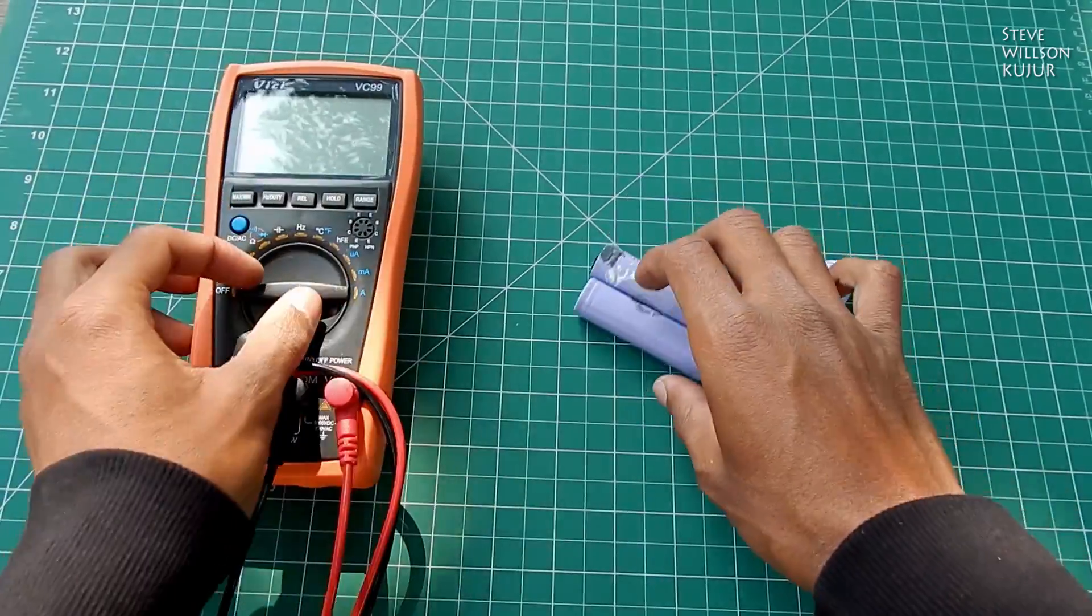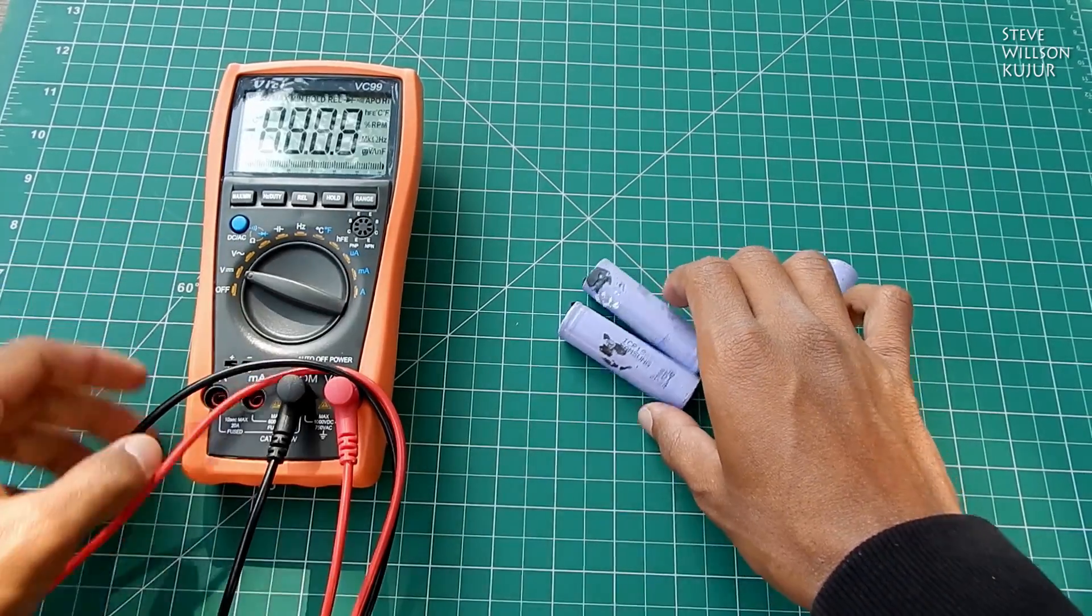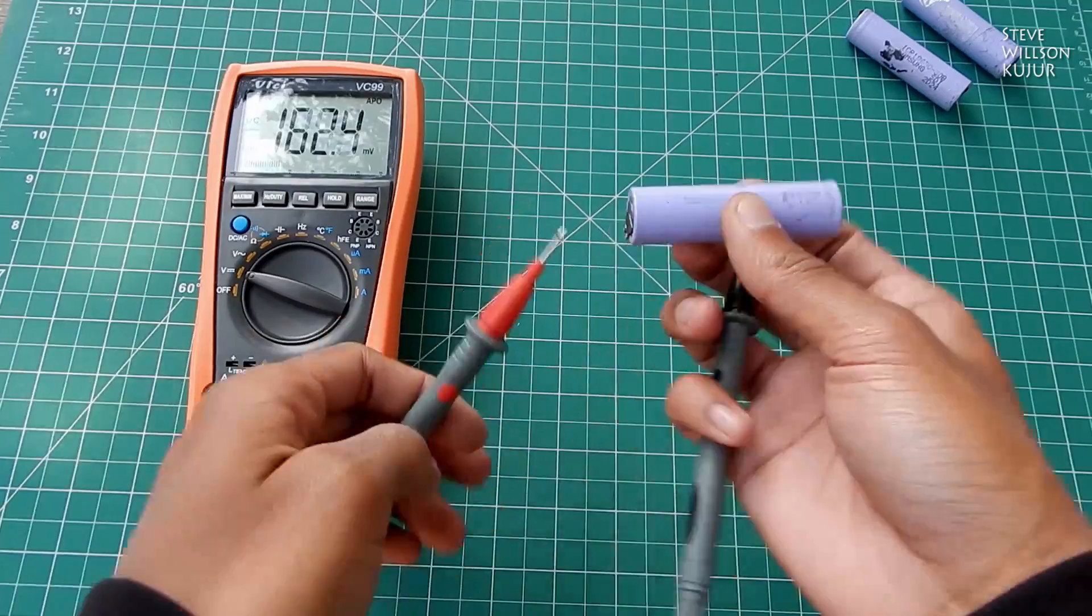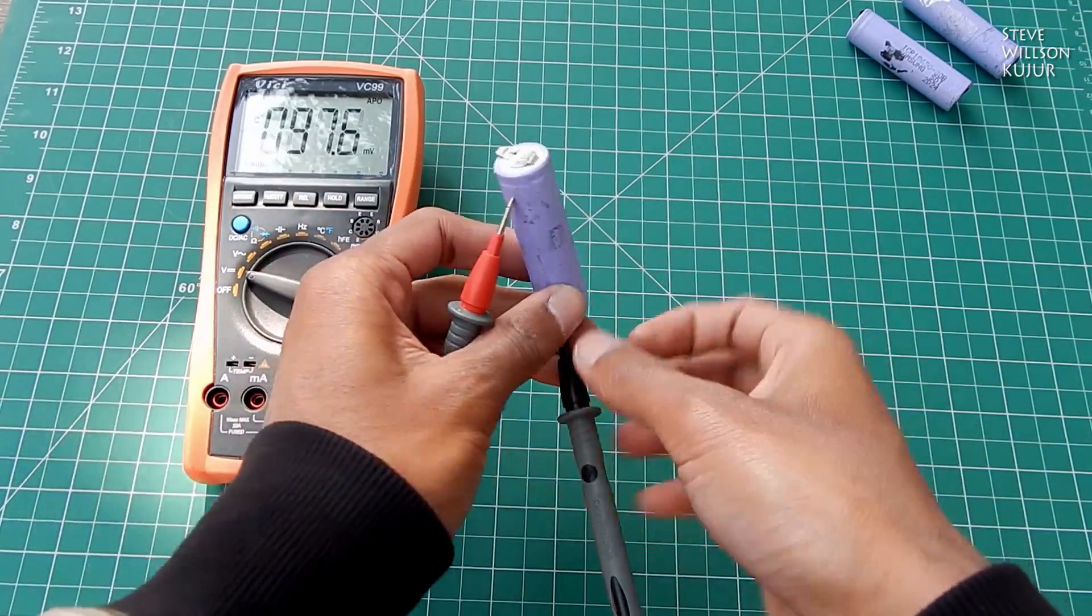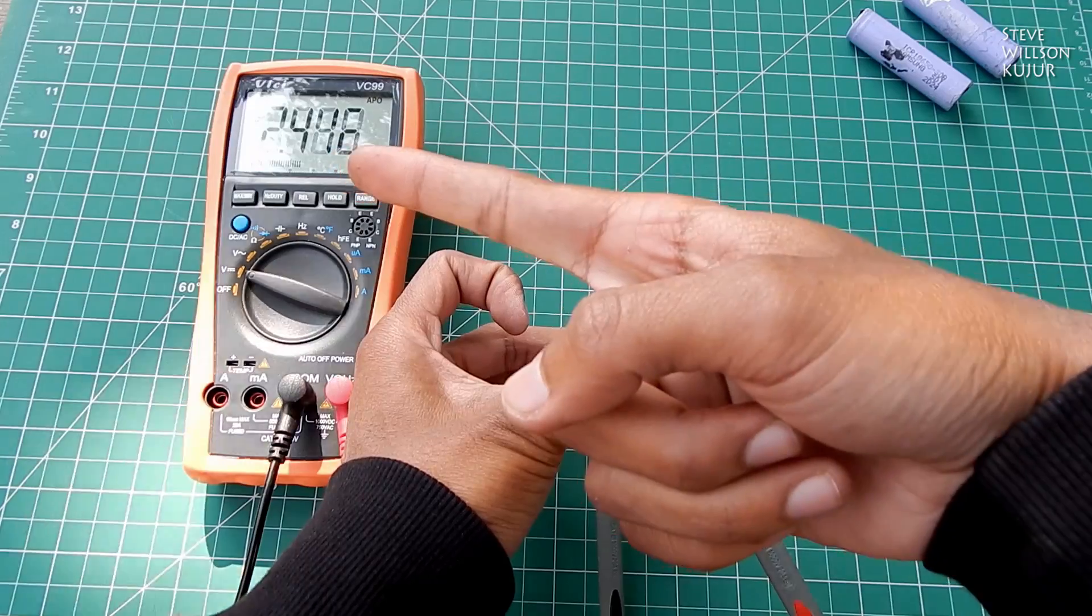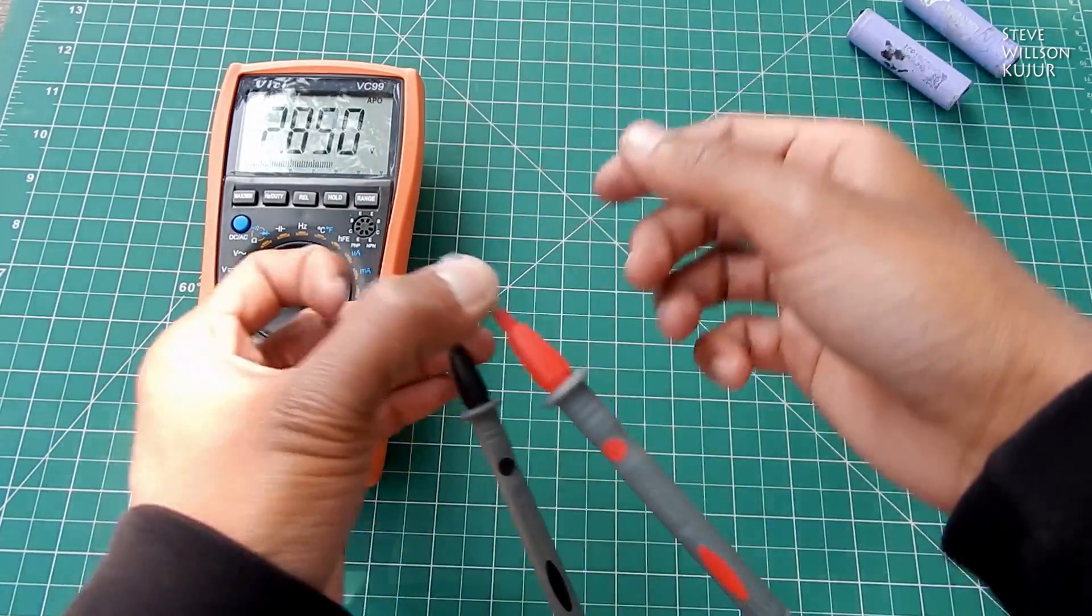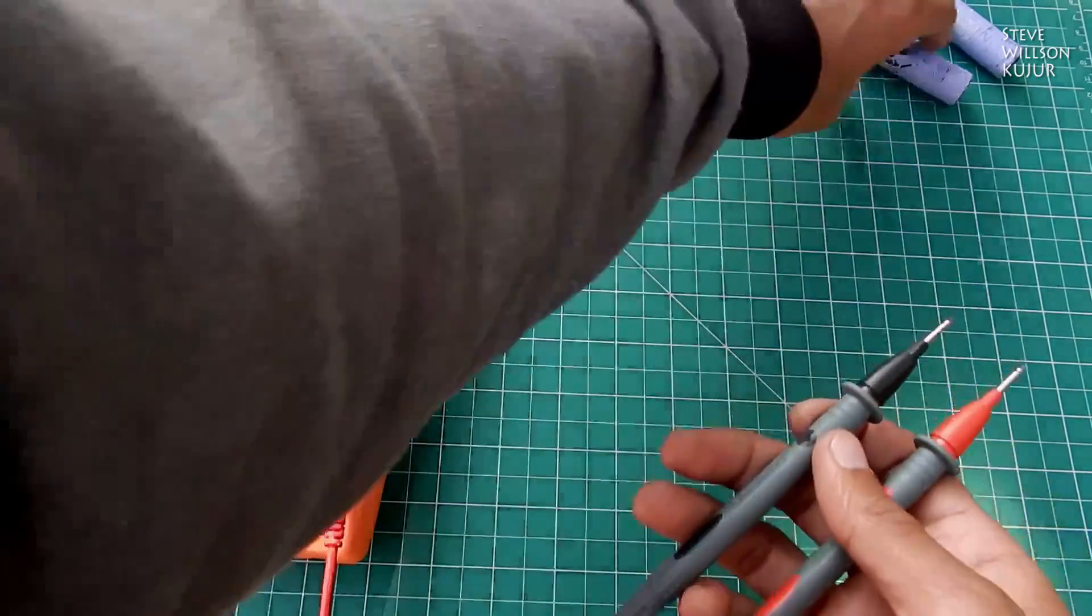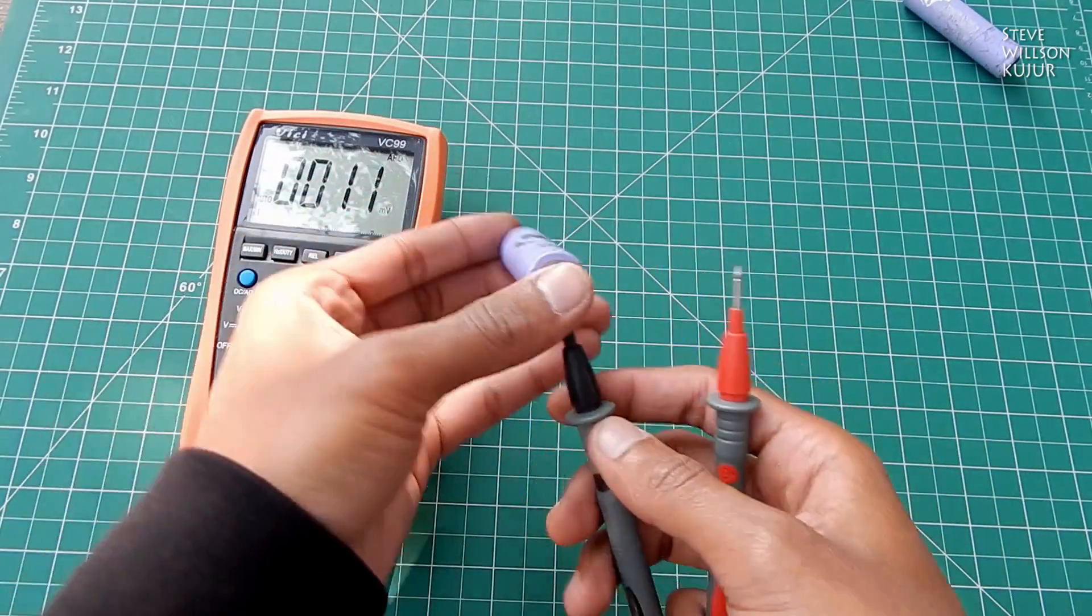Now how to know if they are good or bad? You need a multimeter. Just test it one by one, negative to negative, positive to positive. If you get a reading then it's good. If you don't get a reading, it's bad.